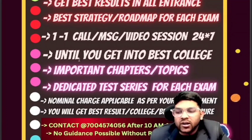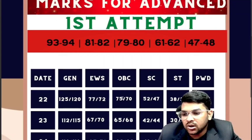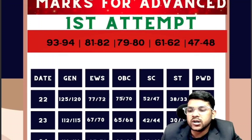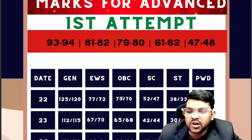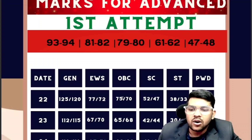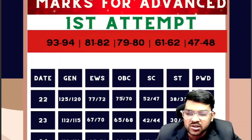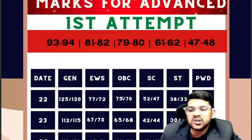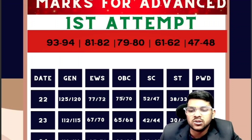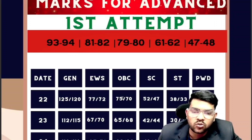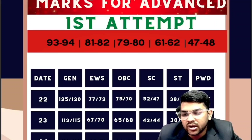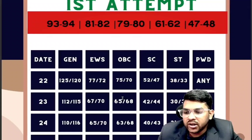For January 23rd, General category requires 112 marks in the first shift and 115 in the second shift. EWS requires 67 and 70, OBC requires 65 and 68. SC requires 42 and 44, ST requires 30 and 32, and PWD again requires nil marks.